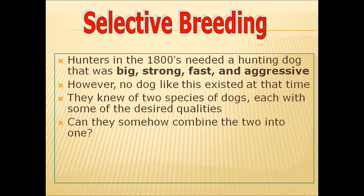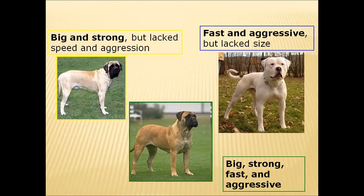In the 1880s, hunters were in need of a hunting dog that should be big, strong, very fast in movement, and aggressive. However, they did not find any such dog at that time. They knew that two species of dogs existed, each having some of the desirable characters. They wanted all those desirable characters in one species, so they conducted selective breeding experiments.